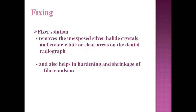After rinsing, the film is placed in the fixer solution. The fixer removes the unexposed silver halide crystals. If they are not removed, we cannot differentiate the exposed from the unexposed areas. The exposed areas are already dark; the unexposed silver halides create white or clear areas when removed, allowing us to see the structures on the x-ray. The fixer also hardens and shrinks the film emulsion.